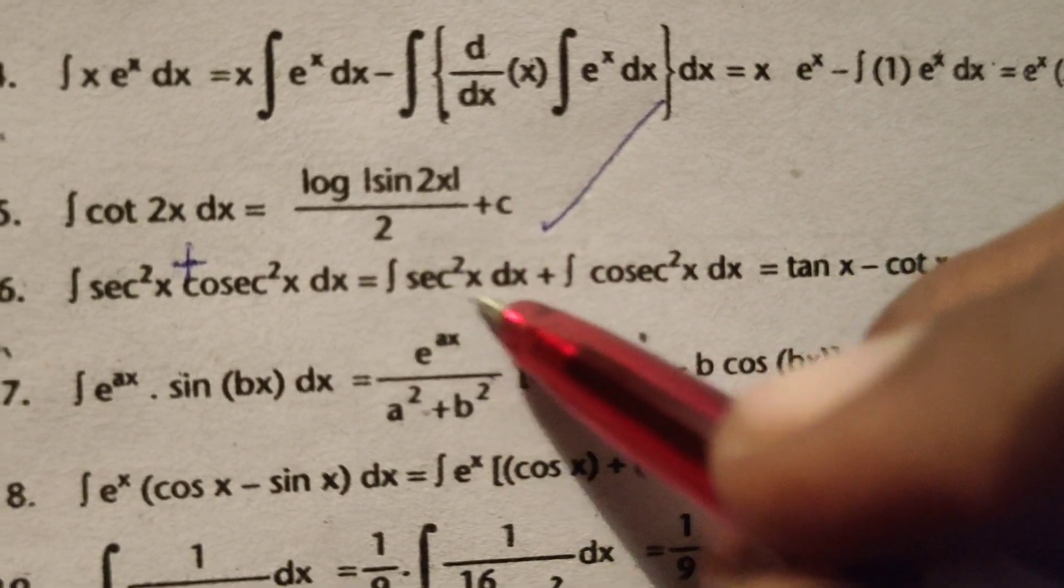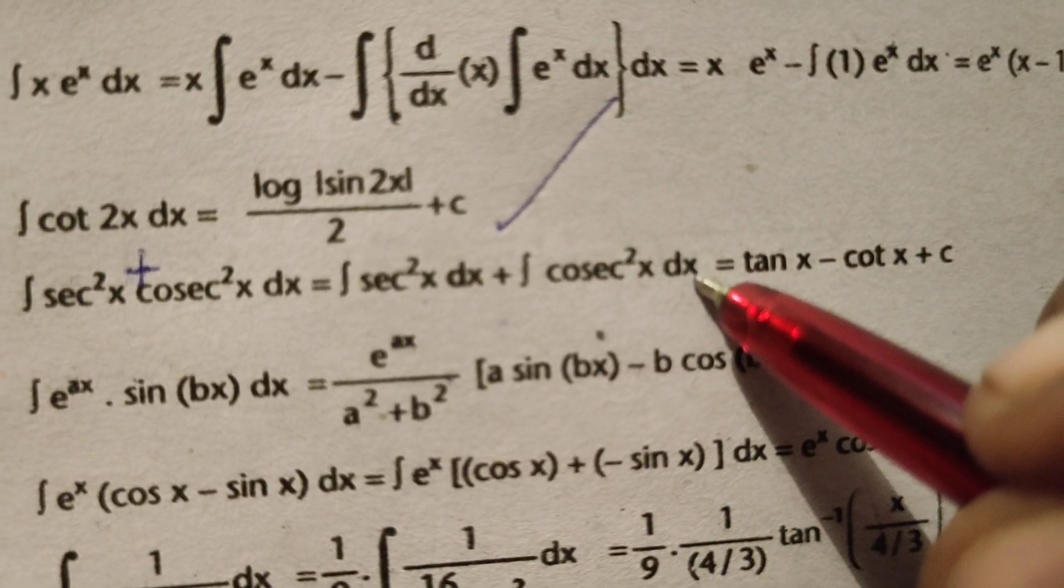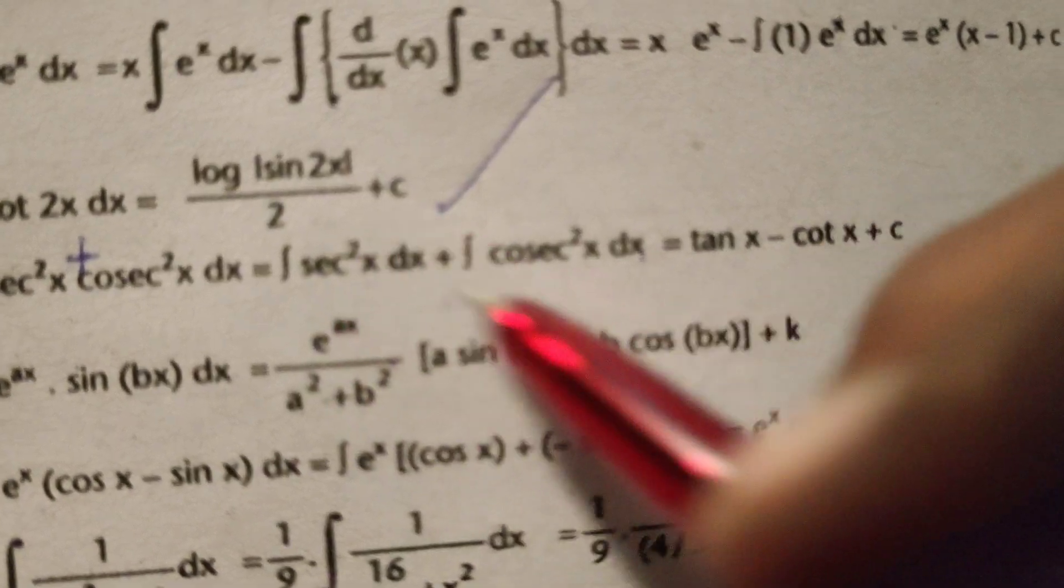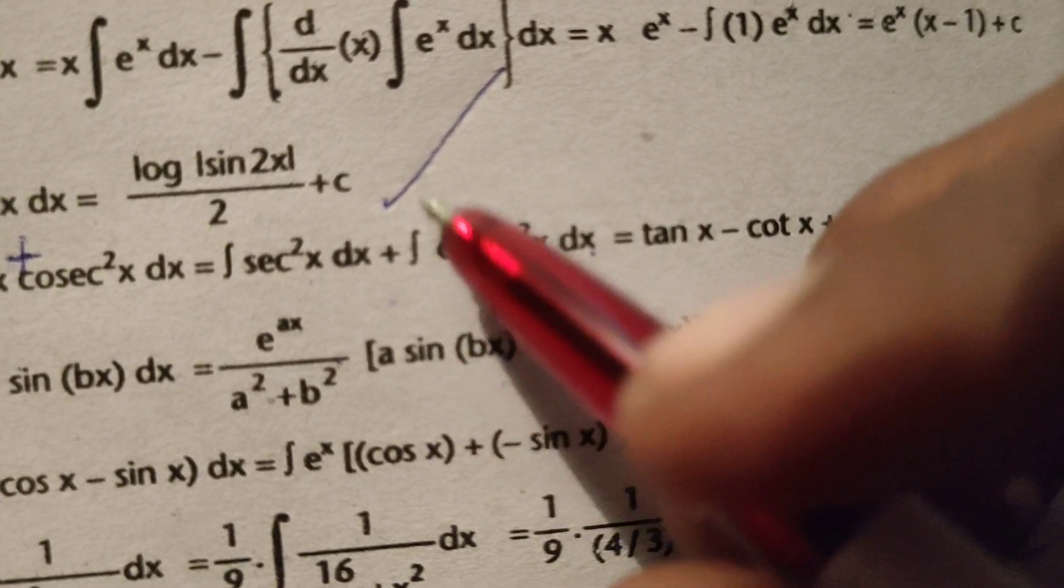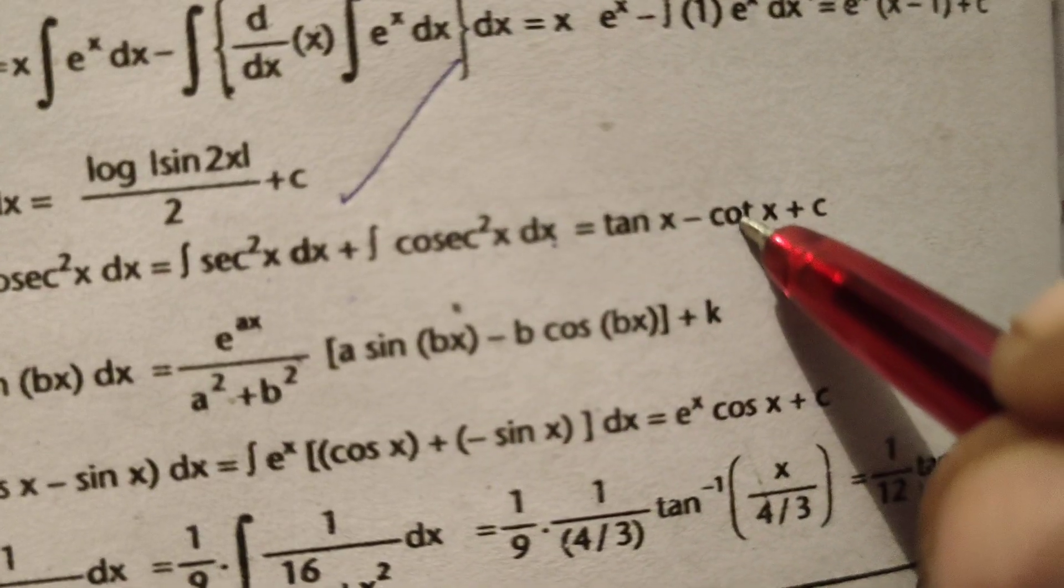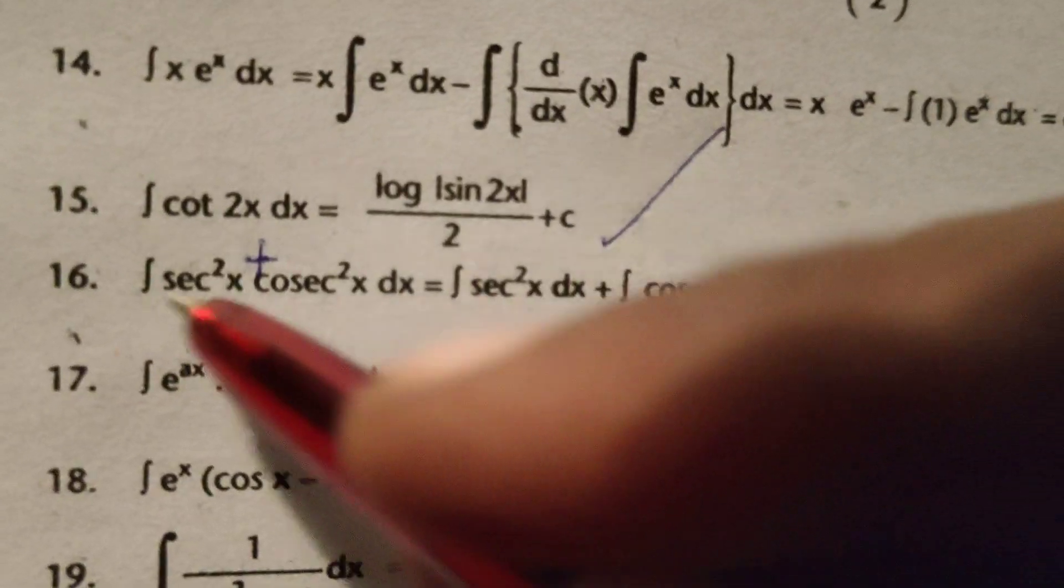What is integral of secant square x? Tan x. Here integral of cosecant square x means minus cot x plus c. This is the solution to this evaluated integral.